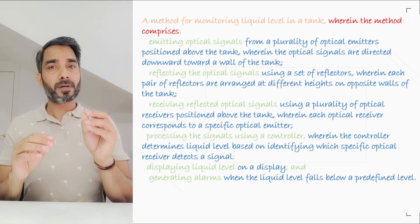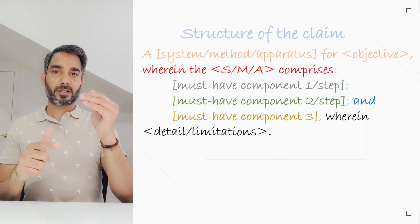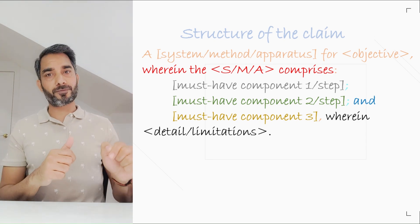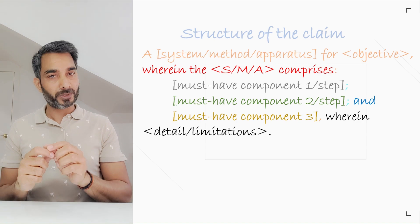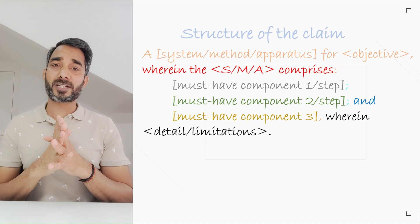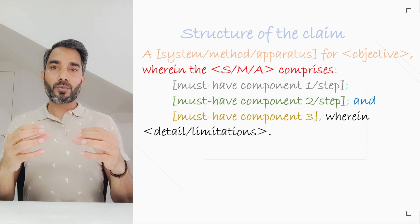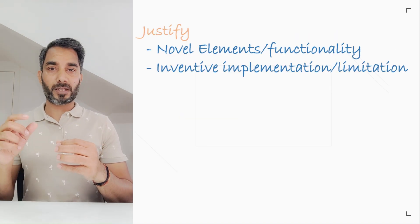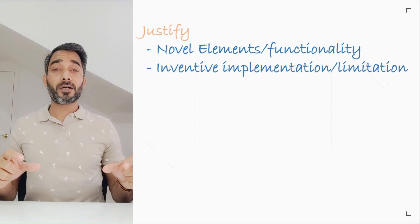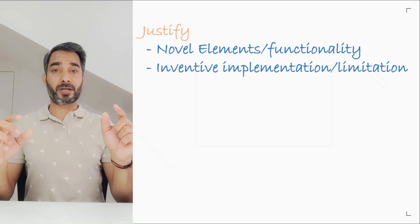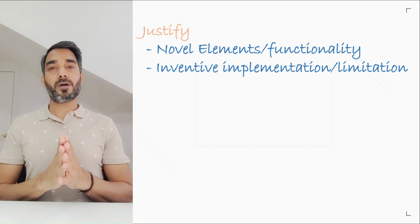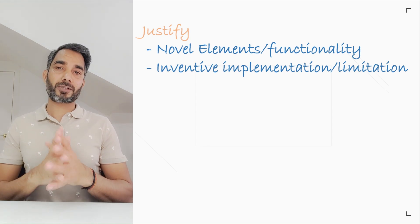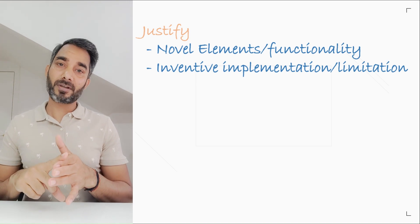All in all, please remember the structure: preamble, transition, and elements — semicolons and 'and' before the last element, then a full stop. Method claims should start with the gerund form — verb plus -ing. Now, in a few questions they ask you to justify your claim. You need to indicate that you have included a set of emitters, a set of receivers, and a set of reflectors positioned at different levels. Based on this arrangement, the controller receives the signals and decides what level it is. Because of these limitations and the inter-functionality between the components, you are able to provide the output to the user. That's how you justify that your claim is novel and has an inventive step.